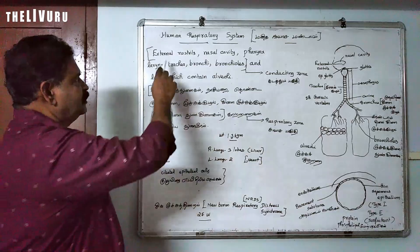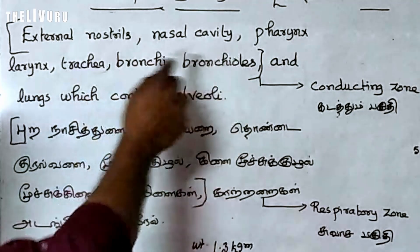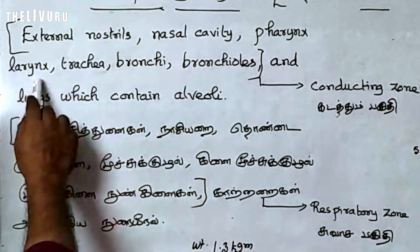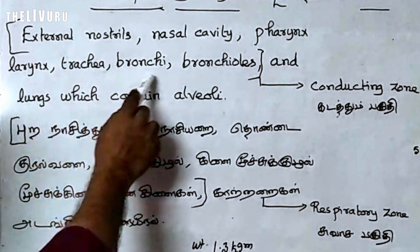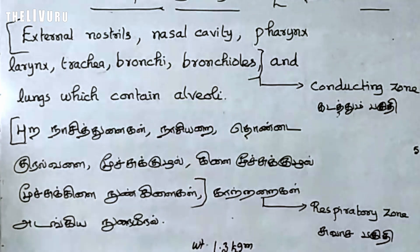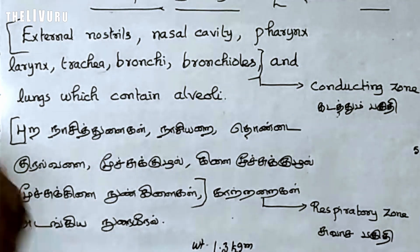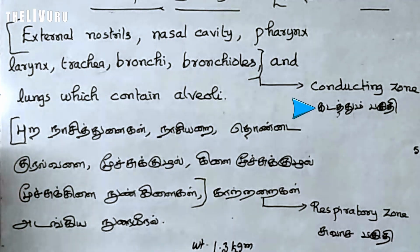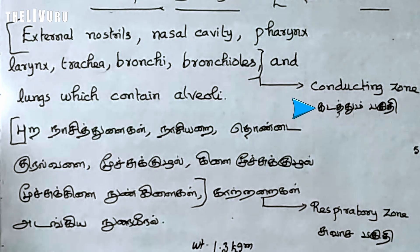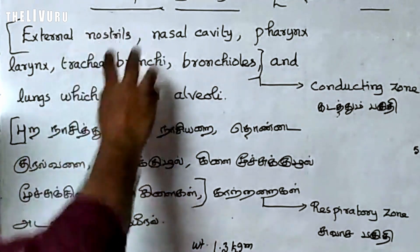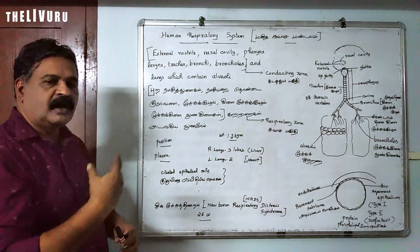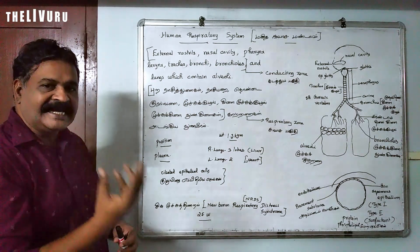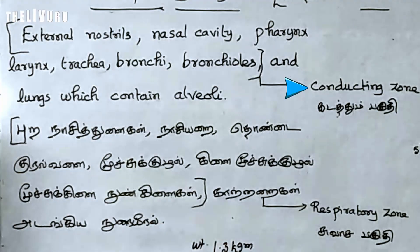Let's see how this region is known. External nostrils, nasal cavity, pharynx, larynx, trachea, bronchi, and bronchioles together form a region known as the conducting zone. This region is called the conducting zone because these structures are involved in the conduction of air.